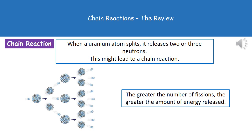If you look at the diagram in the bottom left of the screen, you can see that we start off with one neutron impacting on that first uranium atom. That's going to split into two smaller atoms and release three neutrons. Those three neutrons are then going to join with three uranium atoms, which will split and release three neutrons each. So the greater the number of fissions, the greater the amount of energy released, and this is going to increase very rapidly.